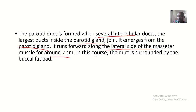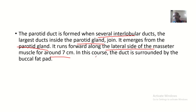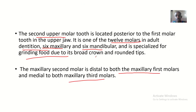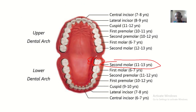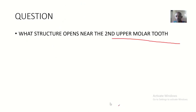In this course, the duct is surrounded by the buccal fat pad. When you're asked this question in a viva, you don't really need to talk about all these extra details — the key answer is that what opens opposite the second upper molar tooth is Stensen's duct. I hope you enjoyed the lecture. See you in the next one. Bye for now.